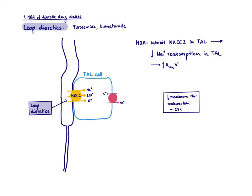The next diuretic class are the loop diuretics. The name implies where they act — in the loop of Henle. They block the triple transporter NKCC, which takes back sodium, chloride, and potassium. The mechanism of action is to block sodium reabsorption, and whenever you block sodium reabsorption, you lose more sodium in the urine and therefore also increase urine flow because water follows.